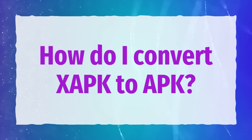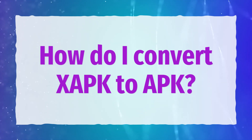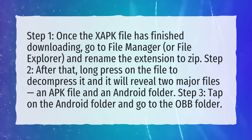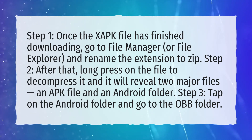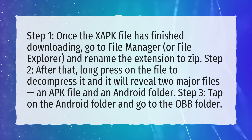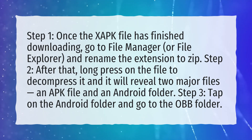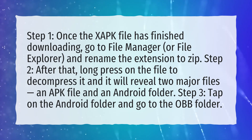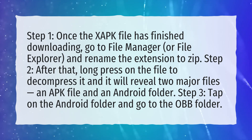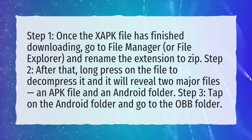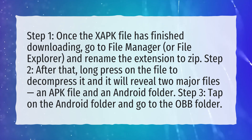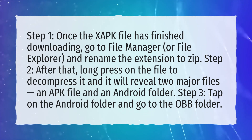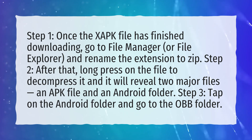How do I convert XAPK to APK? Step 1: Once the XAPK file has finished downloading, go to File Manager or File Explorer and rename the extension to zip. Step 2: After that, long press on the file to decompress it and it will reveal two major files, an APK file and an Android folder.